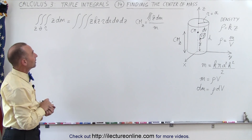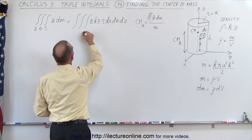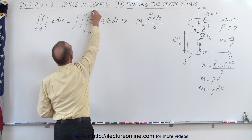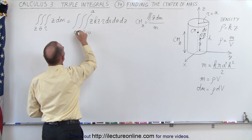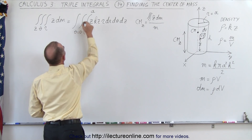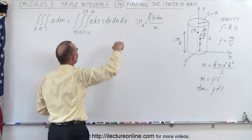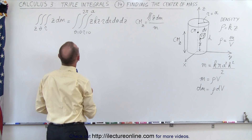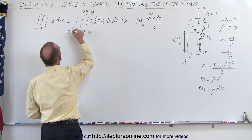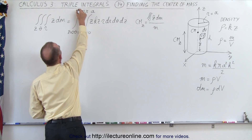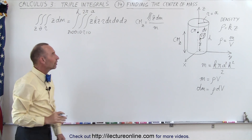Now we set the limits of integration. r is integrated from 0 to a (the radius), theta is integrated from 0 to 2 pi going all the way around the cylinder, and z is integrated from 0 to h, the height.